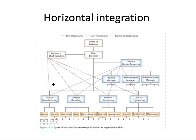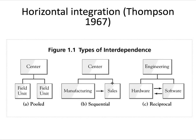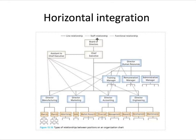Many organisations have line relationships, which are reporting or command lines; staff relationships, which are support functions; and functional relationships, where people are working together on something. So vertical differentiation creates the need for horizontal integration, and that integration can take the form of line, staff, or functional relationships, as well as the pooled, sequential, or reciprocal styles that Thompson described.